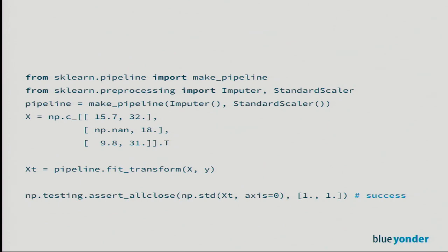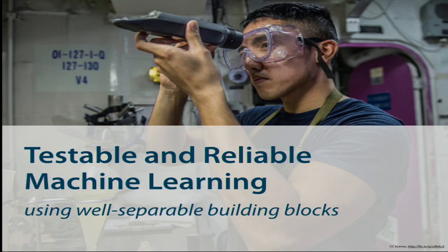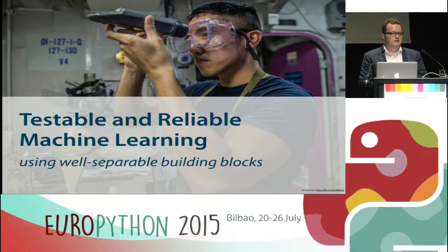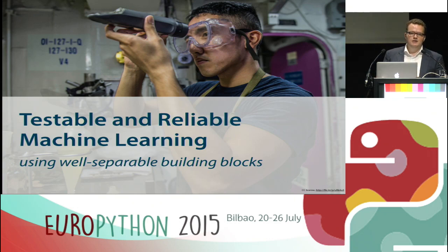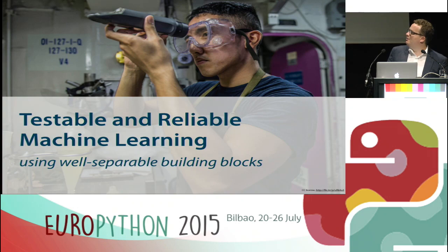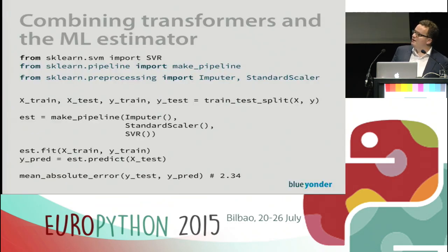We've done this in a way where we can individually test each building block. Even if these transformers weren't in scikit-learn, we could write them ourselves and the tests would be straightforward. The biggest gain is this: if you want to write maintainable software and avoid spaghetti code in your numeric code, try to separate different concerns into independent, composable units that you can test individually, combine, and test as a combined model.